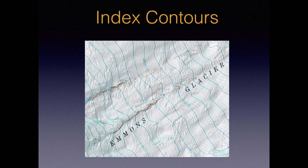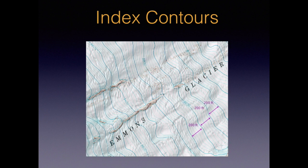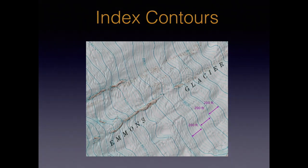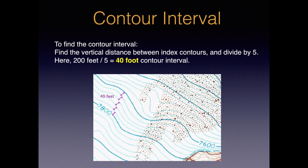Now let's have a look at our third key term, the index contour. Here we see a map of the Emmons Glacier on Mount Rainier. Notice that every fifth contour is printed in a bold or heavy line weight, and most of these bold lines have an elevation printed on them. A little quick math shows us that these index lines are 200 feet apart. Knowing this, we can determine the contour interval if it's not printed on the map. To find the interval, we take the vertical distance between index contours and divide by 5. Here, 200 feet divided by 5 gives us a contour interval of 40 feet.